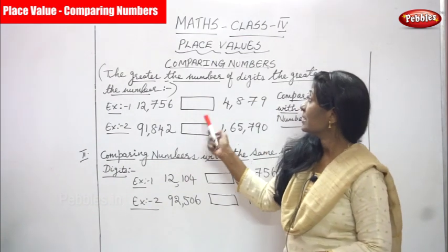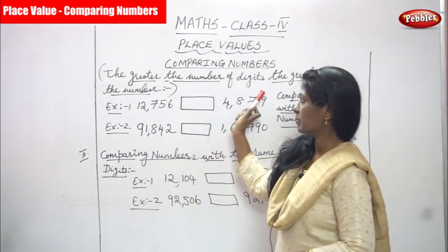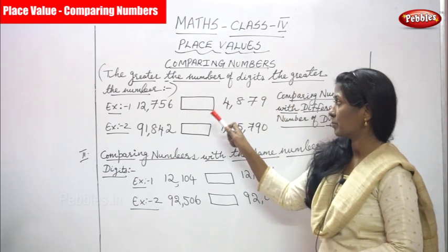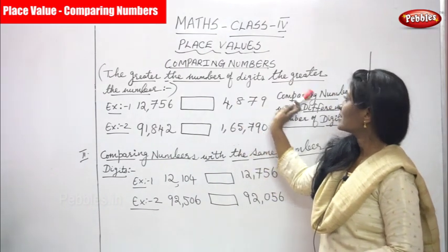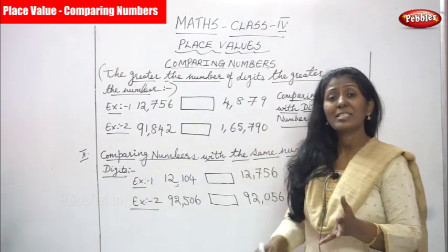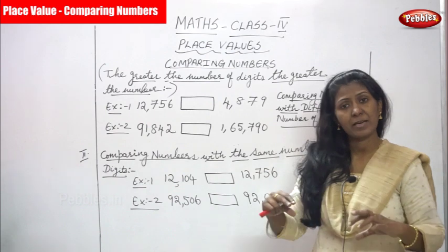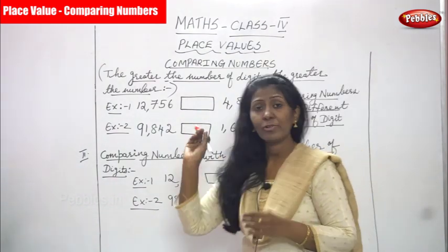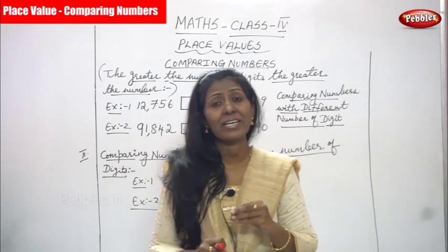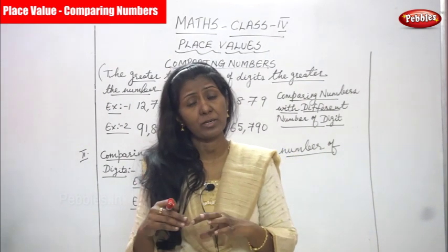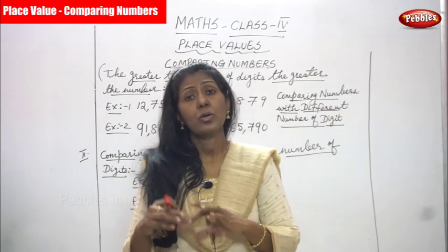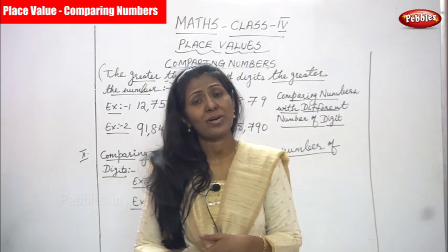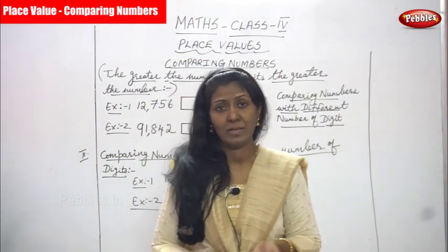Now we are going to see comparing numbers. The greater the number of digits, the greater the number. Which number has more digits is called the greater number. First we have to find out how many digits are in the particular number. If the number of digits is large, that particular number is called the greater number.